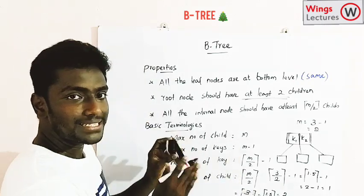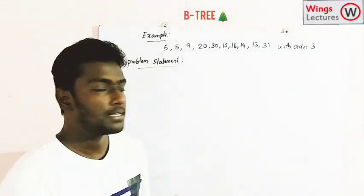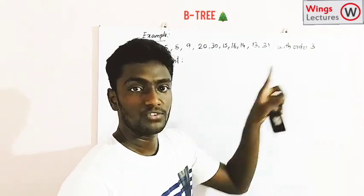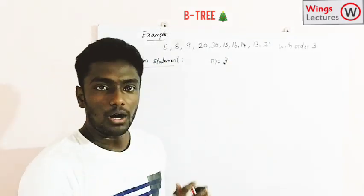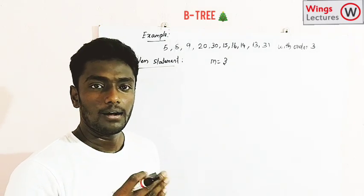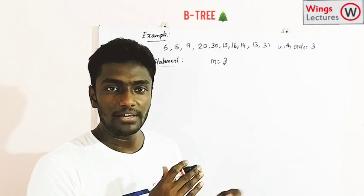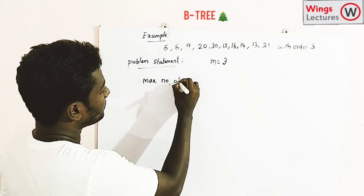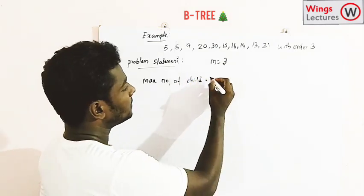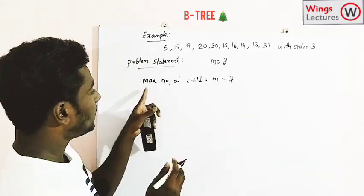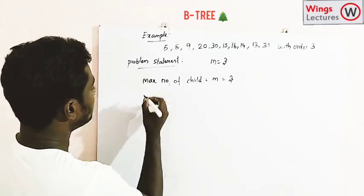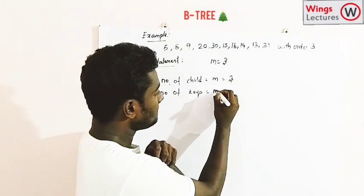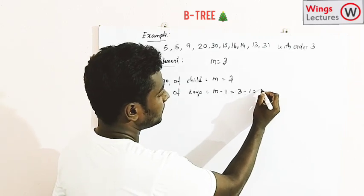Now let's work through an example. We have 10 elements to insert into a B-tree with order 3, meaning m equals 3. From our formulas, we find: maximum number of children is 3, so a node can have at most 3 children. Maximum number of keys is m minus 1 equals 2, so each node can hold at most 2 keys.